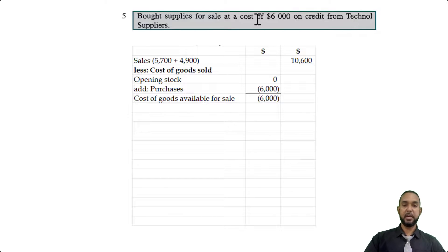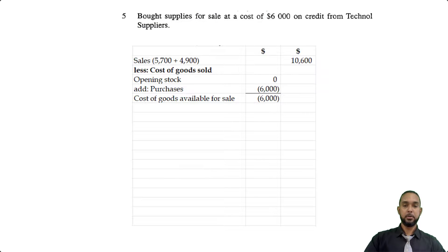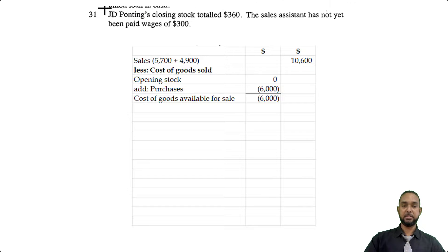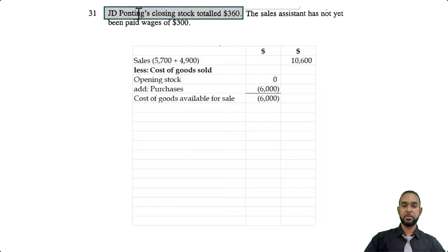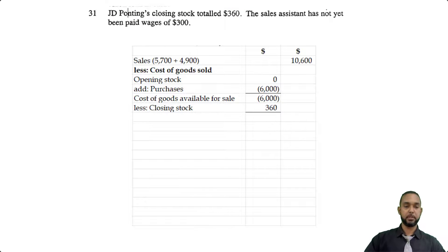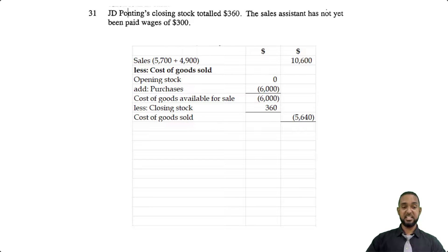Now we subtract our cost of goods sold. JD Ponting just started business and there was no opening stock mentioned, so we can safely assume there was none. There was one purchase figure: $6,000 from Technol Supplies. Opening stock plus purchases gives cost of goods available. They told us closing stock was $360. So $6,000 minus $360 gives us $5,640 as cost of goods sold.